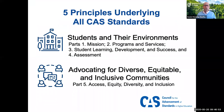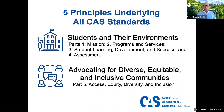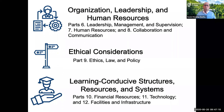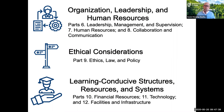There are five principles underlying all CAS standards. First is this idea of students and their environments — really, how do we create environments that support student learning, development, and success, and really assess if that's happening. How programs and services can advocate for diverse, equitable, inclusive communities. What does that organization, leadership, and human resource portion of a program or service look at around leadership, management, supervision, collaboration, and human resources? What are the ethical considerations specific to that functional area? And then how do those functional areas create the systems and infrastructure to support the programs and services for students — finances, technology, and facilities?